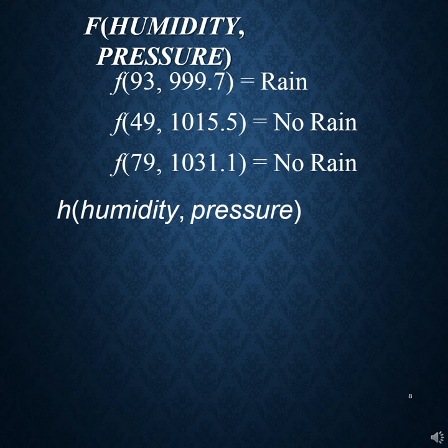So what we are going to do instead is attempt to estimate it — we would like to come up with a hypothesis function, shown here with h, which is going to try to approximate what f does. We want to come up with some function h that will take the same inputs and also produce an output of either rain or no rain, and ideally we would like these two functions to agree as much as possible. The goal of the supervised learning classification task is to figure out what that function h looks like — how can we estimate, given all of this data, what category should be assigned to a particular data point.